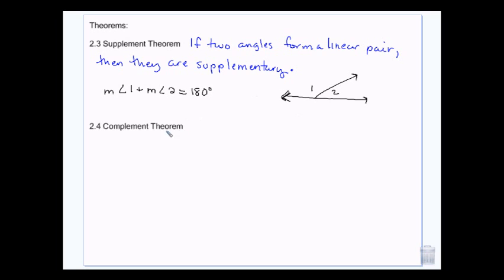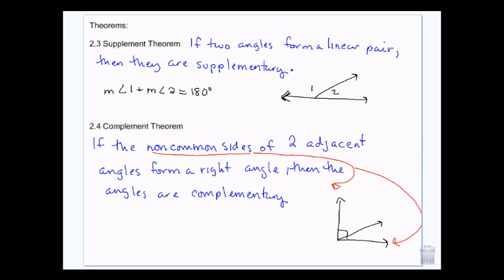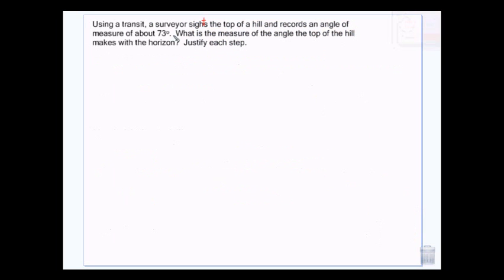The complement theorem is very similar. It says if the non-common sides of two adjacent angles form a right angle — that's 90 degrees — then the two angles are complementary. The common side is the side they share, and the non-common sides are the outside ones, like the outer walls of a duplex. So angle 1 and angle 2 add up to 90 degrees.